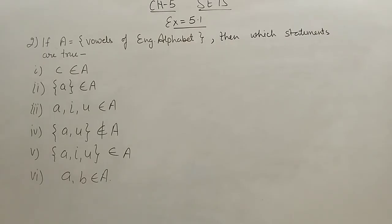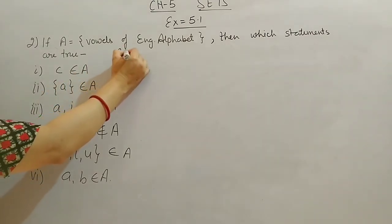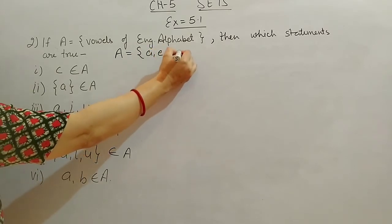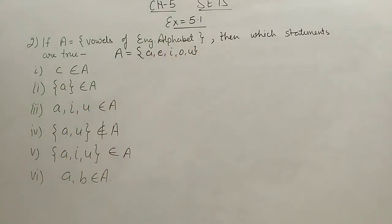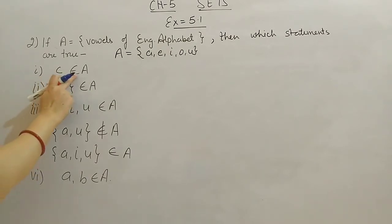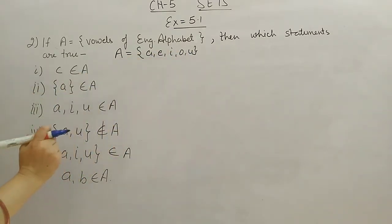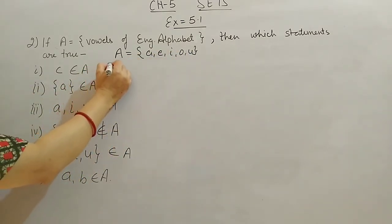Next, Question 2. If A is the set of vowels of the English alphabet, then which statements are true? A = {A, E, I, O, U}. These five letters are vowels of the English alphabet. First statement: C belongs to A — it means C is in A. C is not there, so this statement is false, because C is not a vowel.